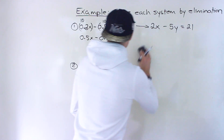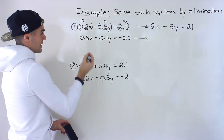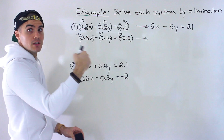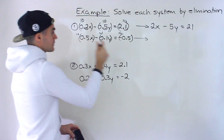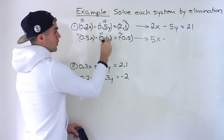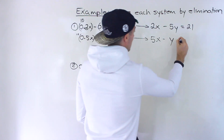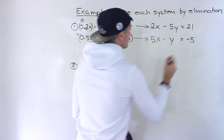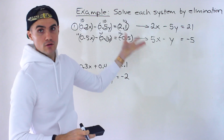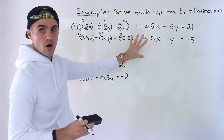Going back to our original system, all of these can be multiplied by 10 as well. Multiplying the second equation by 10: 10 times 0.5 is 5, 10 times 0.1 is 1, so it becomes just y, and 10 times negative 0.5 gives us negative 5. This system and the original are the exact same — you'll get the same solution — but now we're dealing with all integers.